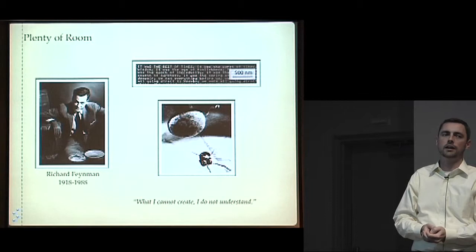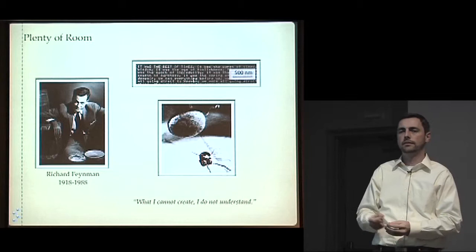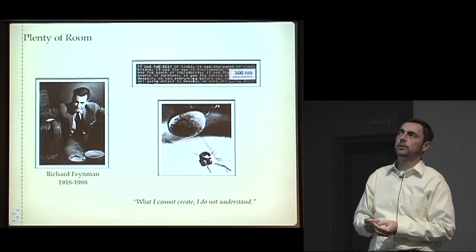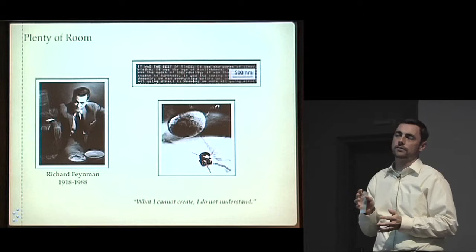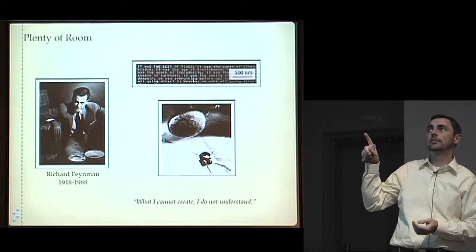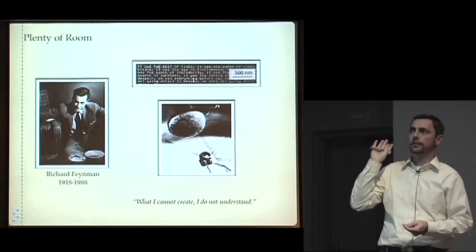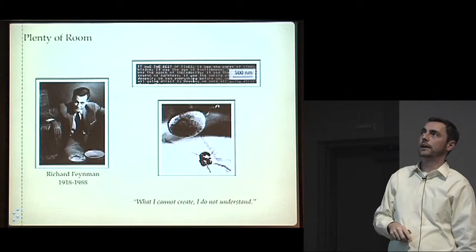One challenge was to build an electronic motor in the space occupied by 1/64th of an inch on a side. And the other was to print the first page of the Encyclopedia Britannica on a page that was 1/25,000th the size. And it turned out that it only took a year to get the electronic motor, but it actually took until 1985, so 25 years, and this little school over on the other side of the bay to come up with an electron beam writer that would write Charles Dickens' Tale of Two Cities on the head of a pin.